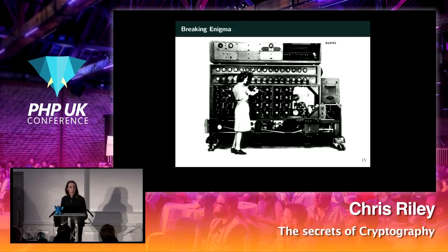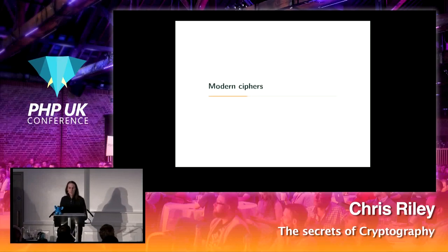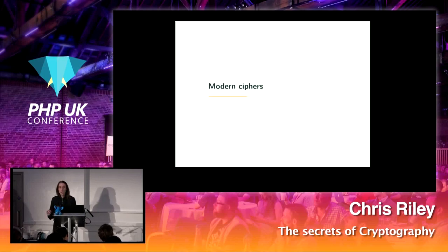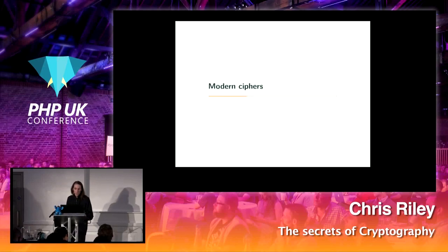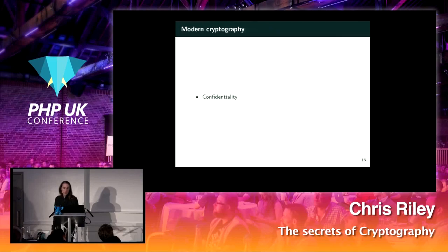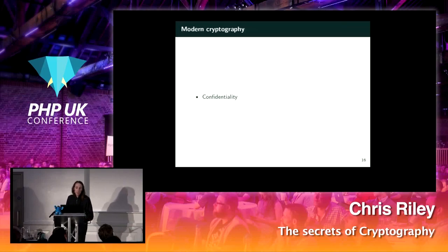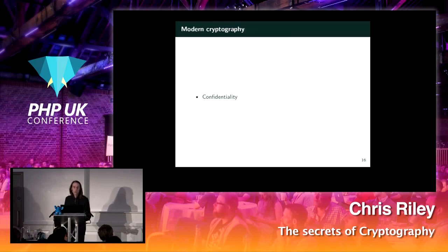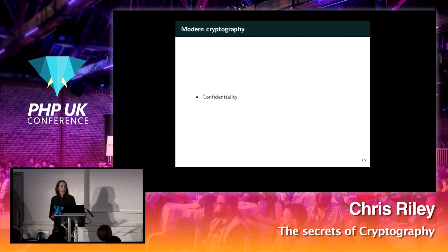We're going to leave the historic ciphers there now — we've gone all the way up to the beginning of the last century with those machines. Now we're going to look at some algorithms actually useful to us today for storing data securely. Modern-day cryptography can be broken down into several different problems we need to solve to communicate securely. The first one is confidentiality — ensuring people other than the intended recipient can't read our messages. Probably the one you want to be using at the moment is AES, the Advanced Encryption Standard.